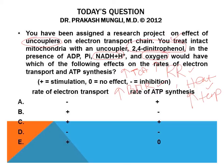Now let's evaluate the choices. Since the uncoupler is not blocking the electron transport chain — in fact it increases the rate of ETC because the chain works overtime to rebuild the gradient — the rate of electron transport chain is increased. Looking at the choices with a '+' for ETC rate, options B, C, and E remain. Regarding ATP synthesis: overall it will be decreased in the presence of an uncoupler because the gradient is not created properly, reducing proton flow through ATP synthase.